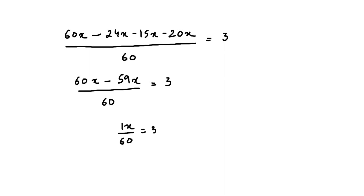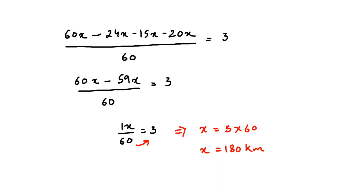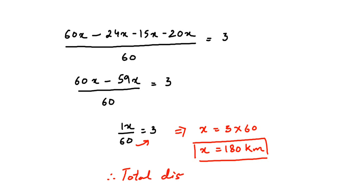Now we transpose 60 to the other side. Since 60 is in the denominator, transposing it means multiplying. So x equals 3 multiplied by 60, which equals 180. So the total distance of his journey is 180 kilometers.